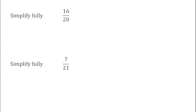For this first question we've got to simplify fully the fraction 16 over 20. When we have a question where we've got to simplify a fraction fully, what we want to do is divide the numerator and denominator by its highest common factor. The highest common factor of 16 and 20 is 4. So if we do 16 divided by 4 we get 4, and 20 divided by 4 is 5. So 16 over 20 simplifies to 4 over 5, which is the fraction in its simplest form straight away.